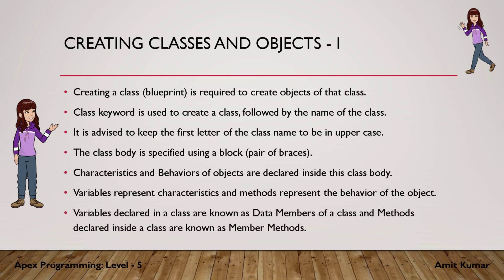Variables declared in a class are known as data members, and methods declared inside a class are known as member methods. Variables represent characteristics and methods represent the behavior of the object. Characteristics are defined with the help of variables known as data members, and behaviors are defined with the help of methods known as member methods.